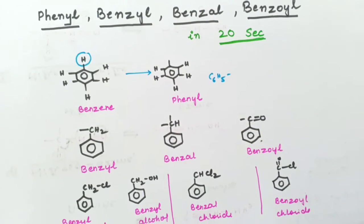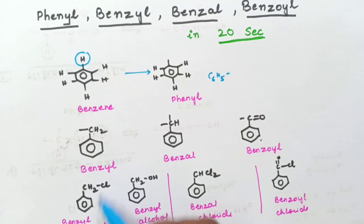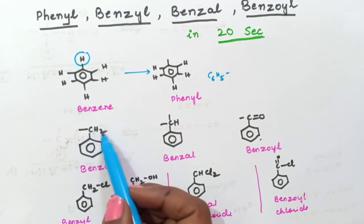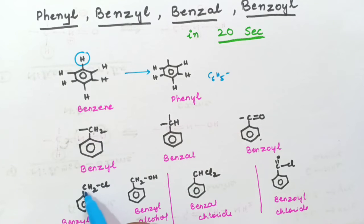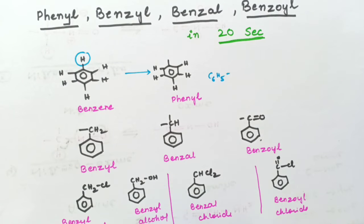So students let us study the examples for this. For benzyl, example is benzyl chloride. So you can see here benzyl group means CH2 group should be there. See here CH2 is there which is attached to chlorine. So this is benzyl chloride. And here you can see CH2 is there attached to OH group. So it is benzyl alcohol.